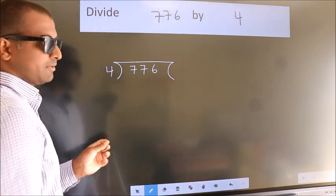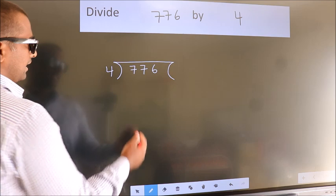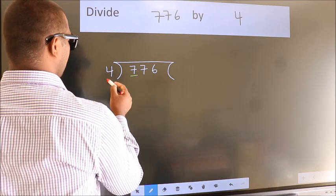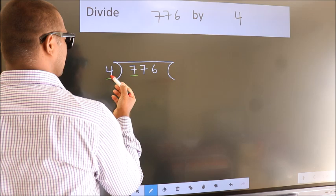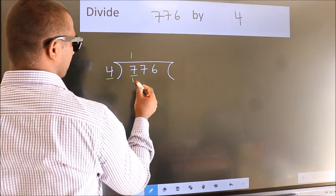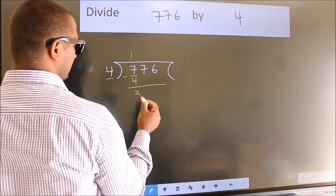This is your step 1. Next, here we have 7, here 4. A number close to 7 in the 4 table is 4 once 4. Now we should subtract. We get 3.